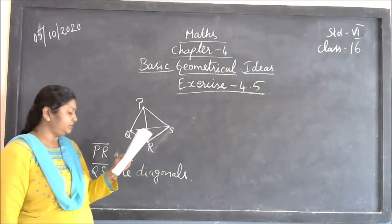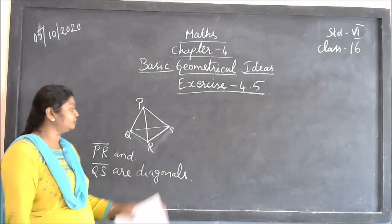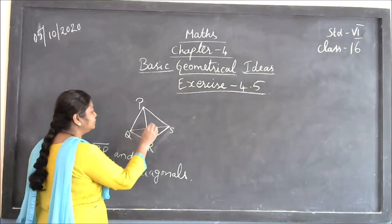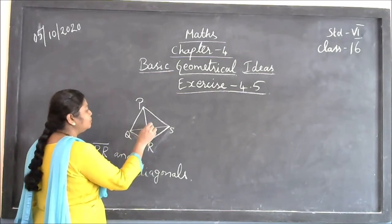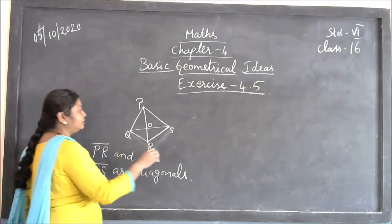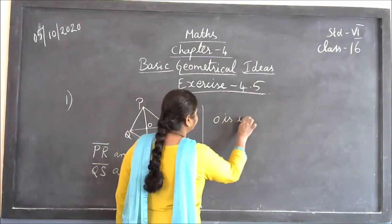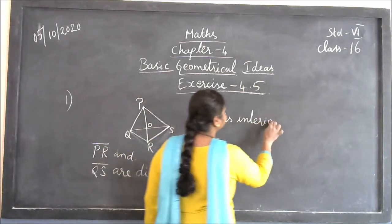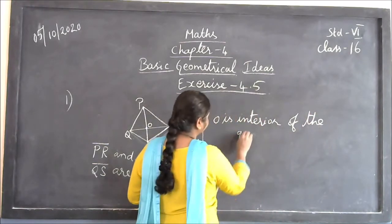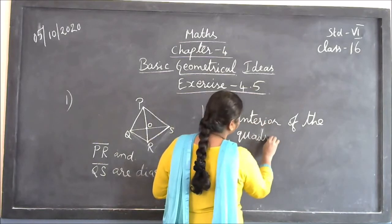Is the meeting point of the diagonals in the interior or exterior of the quadrilateral? Both diagonals meet at point O. O is in the interior of the quadrilateral. So the answer is: O is interior of the quadrilateral.